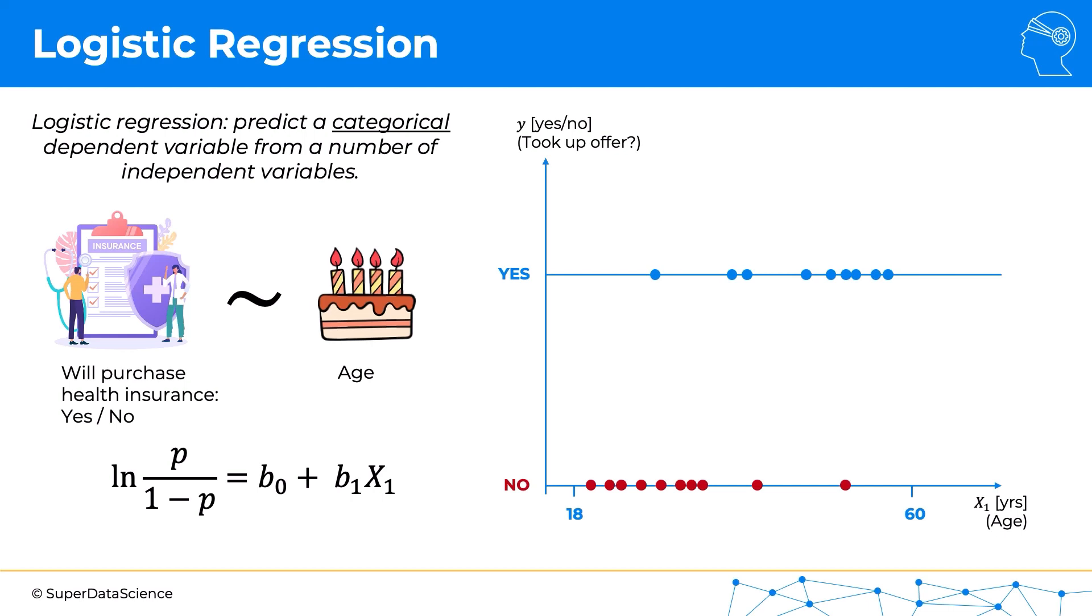The important value to us here is p, and that is the probability that we'll be working with. We'll see it in action just now. Let's look at the logistic regression curve. The logistic regression curve looks like this, and it's also called the sigmoid curve.